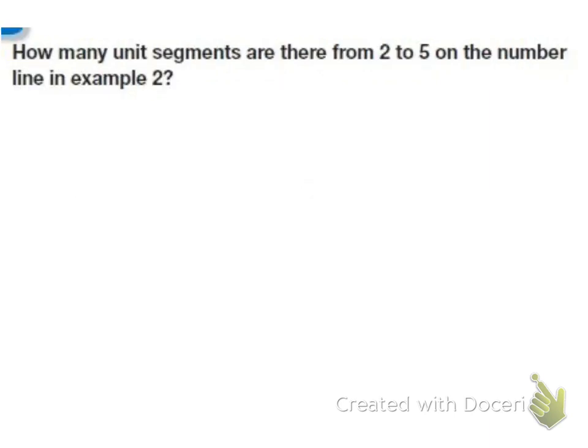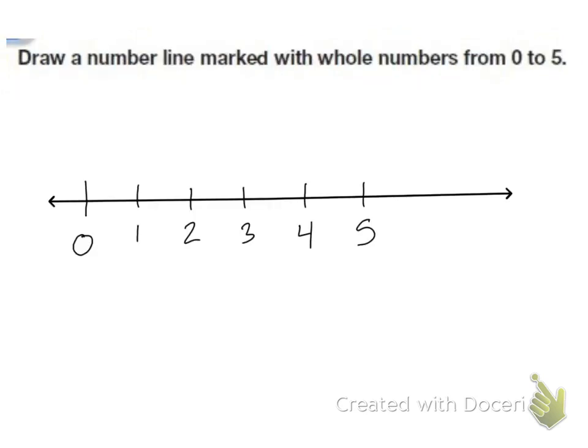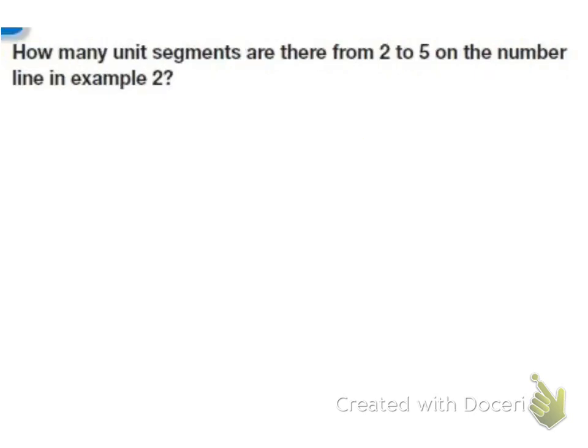This says how many unit segments are there from two to five on the number line in example two. So we go back to this and we want to go from two to five. So I'm going to count the number segments starting at two. So there's one, two, three. So I have three segments between the numbers two and five.